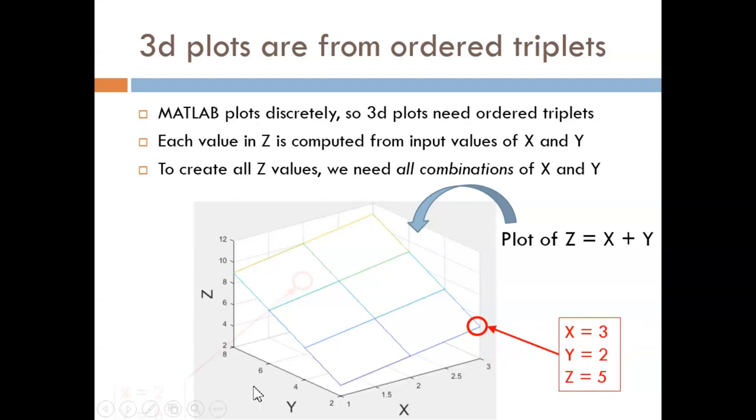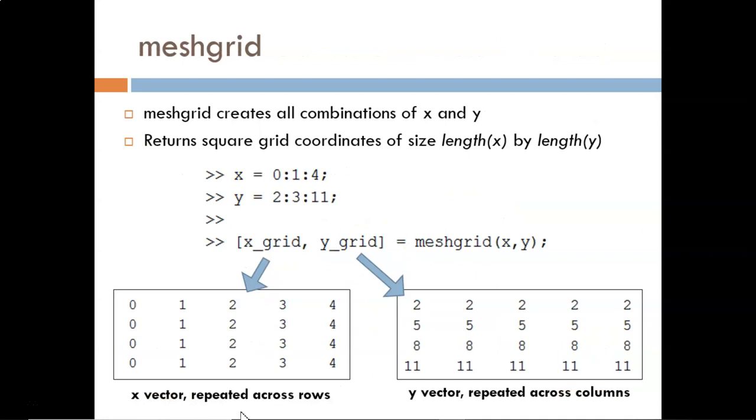Similarly, this point shows X is 2, Y is 8, and Z is 10. All of the intersection points are computed this way, and the lines are simply connecting the dots. How can we do this? How do we obtain every combination of X and Y? We use the function meshgrid.